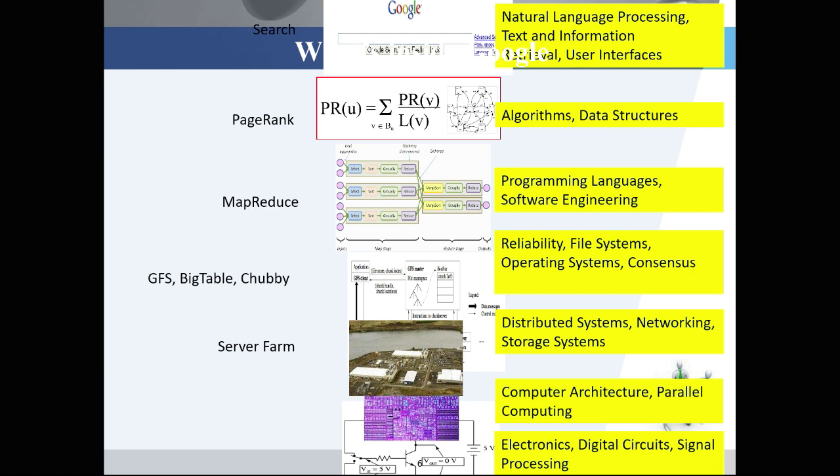So we have at the very top the natural language processing technology, and text and information. And then you have the algorithms, data structure, and the programming languages, software engineering, and the reliability, file system, operating system, consensus, and distributed system, networking, storage, computer architecture, parallel computing. So each of the layer actually includes related with several courses in computer science.